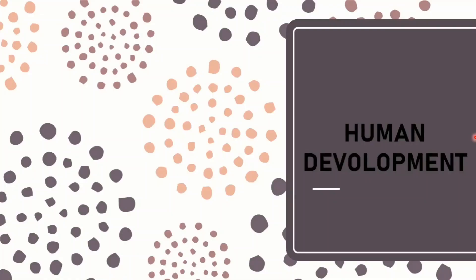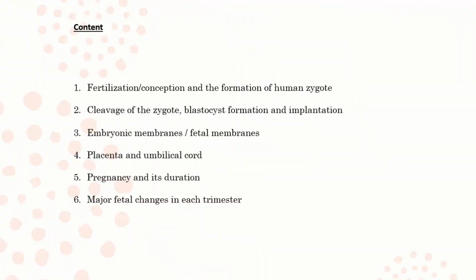Human Development. In this session, we are focusing our attention on 6 main topics. The first is fertilization or the conception and the formation of the human zygote. The second is cleavage of the zygote, blastocyst formation and implantation. The third is embryonic membranes or fetal membranes. The fourth is placenta and umbilical cord. The fifth is pregnancy and its duration. The sixth and last topic is the major fetal changes in each trimester.